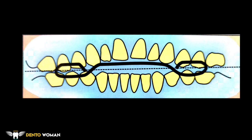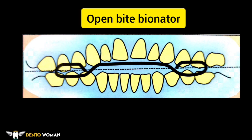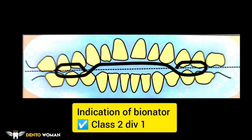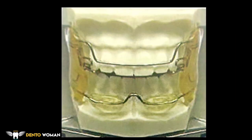This is the open bite bionator. The labial wire crosses the interdental area. It is used in open bite cases to inhibit abnormal posture and function of the tongue. The palatal arch and vestibular wires are the same as the standard appliance. Indications of the bionator include class 2 div 1 malocclusion. This next image is of the Frankel appliance.